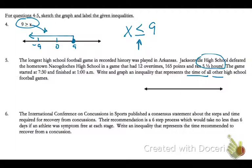The longest game was 5 and a half hours, so all other high school football games have to be less than that. We'll represent all other game times with x. Those are all going to be less than — not equal to, because that would mean it would tie for the longest game — so less than 5.5.